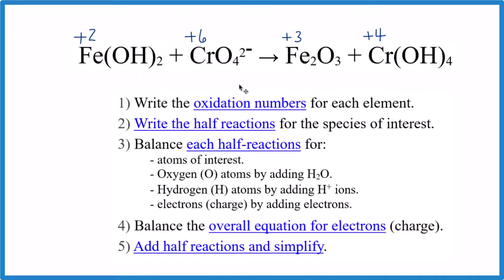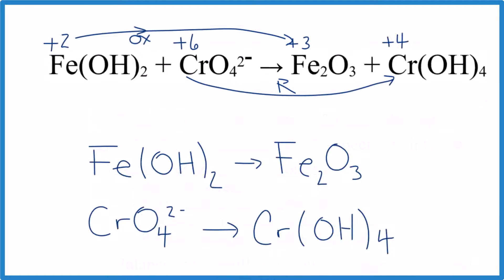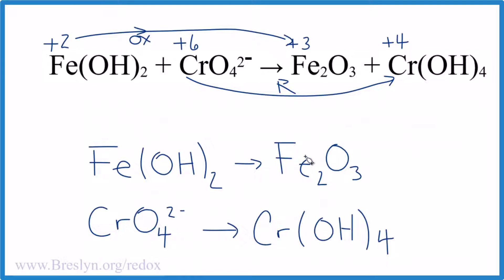Now we need to write the half reactions. So the iron went from plus two to plus three, the chromium plus six to plus four. It's pretty easy to see the plus six to plus four, that number got smaller. That's the reduction. So this is going to be our oxidation up here, this one right here. All right, let's write the half reactions. So we have our oxidation half reaction and then our reduction half reaction.